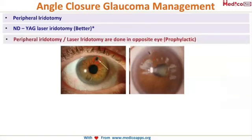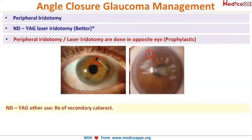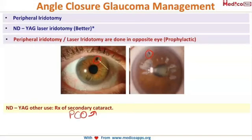This opening you are seeing here is the peripheral laser iridotomy. It is usually done towards the upper eyelid so that the hole is covered by the upper eyelid and there is no cosmetic problem for the patient. Another use of the NDAG laser is to remove posterior capsular opacification in a post-cataract surgery patient — this is also called a secondary cataract. You hit the center with the laser, it creates an opening, and your visual axis is free.